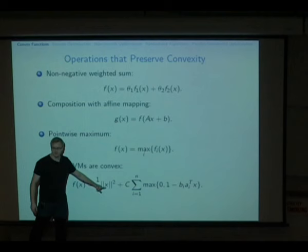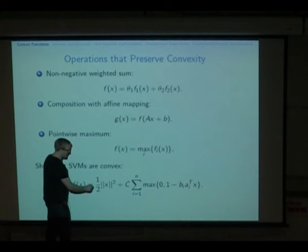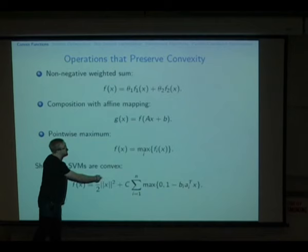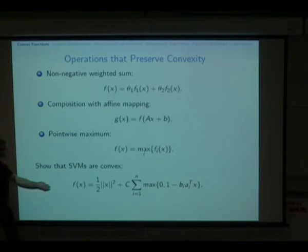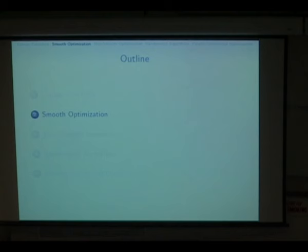Another example is SVMs. The two-norm squared is convex. The hinge loss is a max of a linear function and a constant, both convex, so it's convex. Taking a non-negative weighted sum with C ≥ 0 and 1/2 ≥ 0 gives us the SVM objective. So even though it looks like a nasty function, using the rules and basic properties you can easily show that SVMs are convex. Using those simple rules and those basic functions, you can show that a lot of the things you need to do are convex — or that they're not convex.